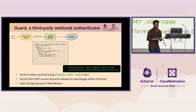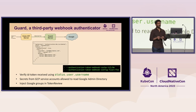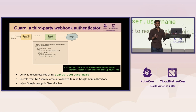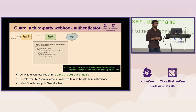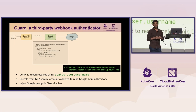The webhook authenticator, Guard, verifies the token, gets the relevant username — which is email for us — and since Guard uses Google Groups, it checks if the domain is valid. If so, it makes a follow-up API call to the Google Admin Directory API and lists all the groups that email belongs to. It injects these groups into the token review object and passes it back to the API server, which uses this list of groups and the RBAC configurations on the cluster to decide if the request should be authorized.